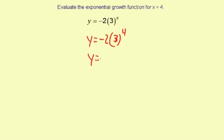3 to the 4th is 81, so it's y equals negative 2 times 81. And then we have y equals negative 2 times 81, which is negative 162. So our y is negative 162.